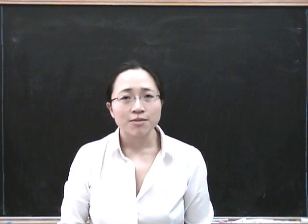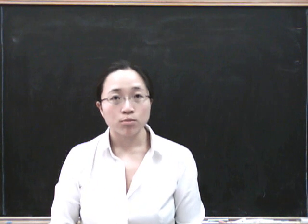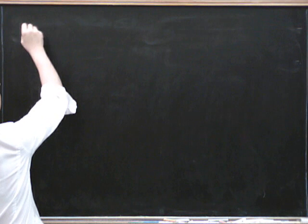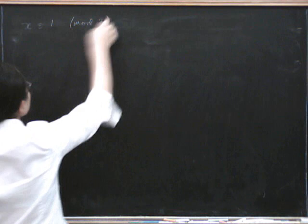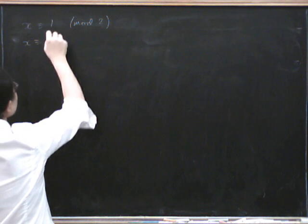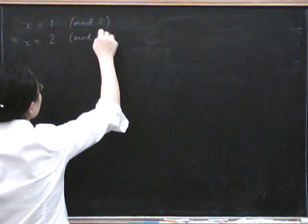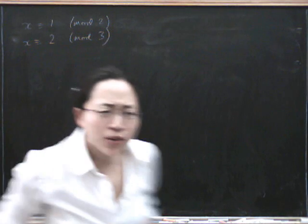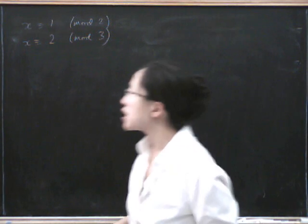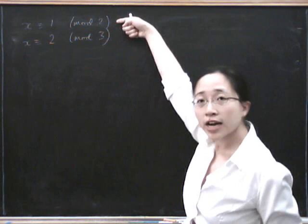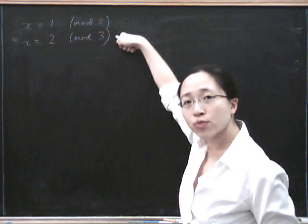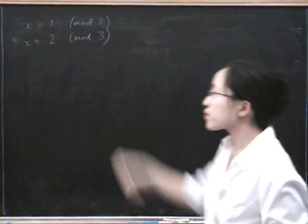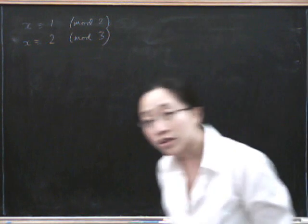Let's have a look at some simultaneous equations in modular arithmetic. Suppose I tell you that x is congruent to 1 mod 2, but it's also congruent to 2 mod 3. Can you think of any solutions? I want a number such that if I divide it by 2, I get remainder 1, and if I divide it by 3, I get remainder 2.